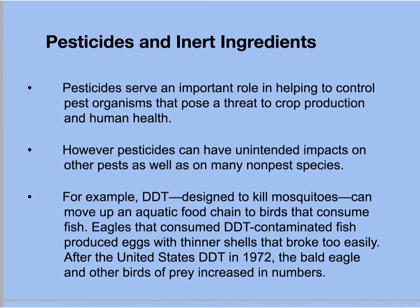One insecticide that comes to mind is DDT. DDT was designed to alter nerve transmissions in insects, but it moved up the aquatic food chain all the way to eagles that consumed fish. Eagles that consumed DDT-contaminated fish produced eggs with much thinner shells, which would prematurely break during incubation. After the U.S. banned spraying DDT in 1972, the bald eagle and other birds of prey had an increase in numbers. DDT is still manufactured and used in developing countries as one of the preferred ways to control mosquitoes, because mosquitoes carry deadly parasites like malaria.